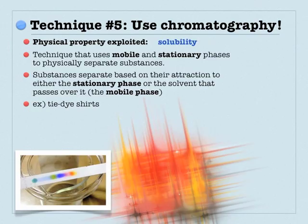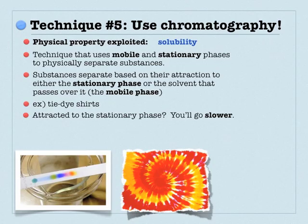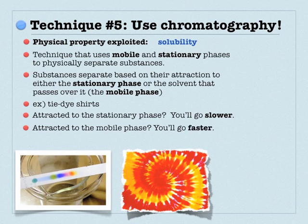Over time you can start separating things out in your column. A tie-dye shirt would be a very oversimple example of this chromatography technique. If you're attracted to the stationary phase, you will move slower through the column. In the paper chromatography, the colors at the bottom — like the light blue — were more attracted to the stationary phase, so they went slowly. You can see at the very bottom there's sort of a teal green that didn't go anywhere at all. You don't want things stuck in your column — you want them to pass through but separate as they go. If you're more attracted to the mobile phase, you go through faster, like the yellow and the orange at the top.